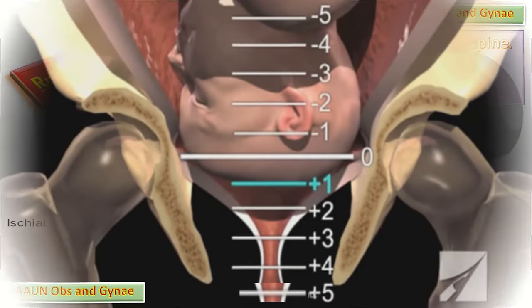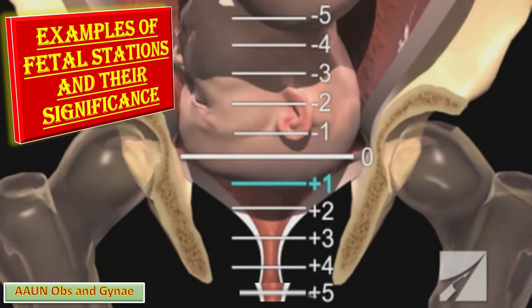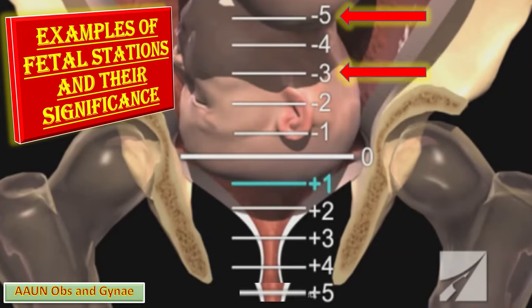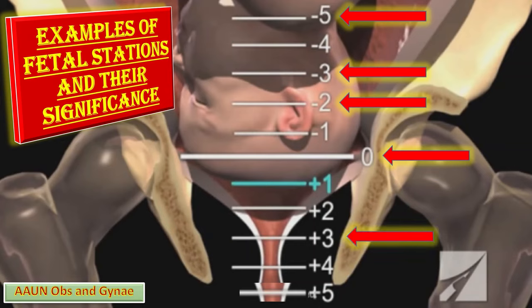Examples of fetal stations: minus 5 means the head is high and has not engaged in the birth canal. Minus 3 means the head is above the pelvis. Minus 2 means the head is 2 cm above the ischial spine. Zero station means the head is at the level of the ischial spine. Plus 3 means the head is 3 cm below the ischial spine and within the birth canal. Plus 5 means the baby's head is filling the vaginal opening just before birth — the head is crowning.